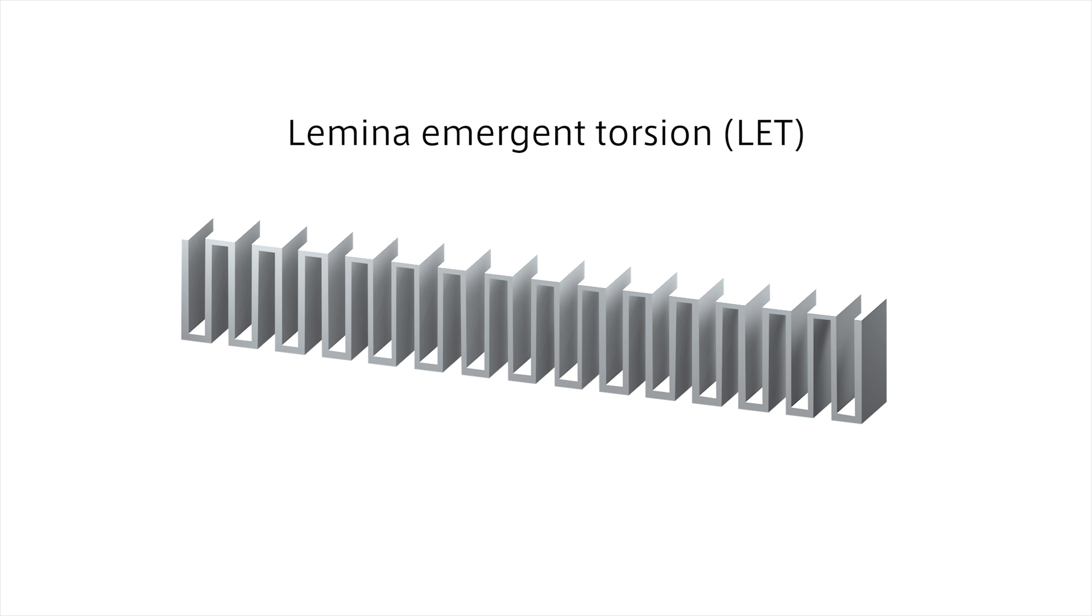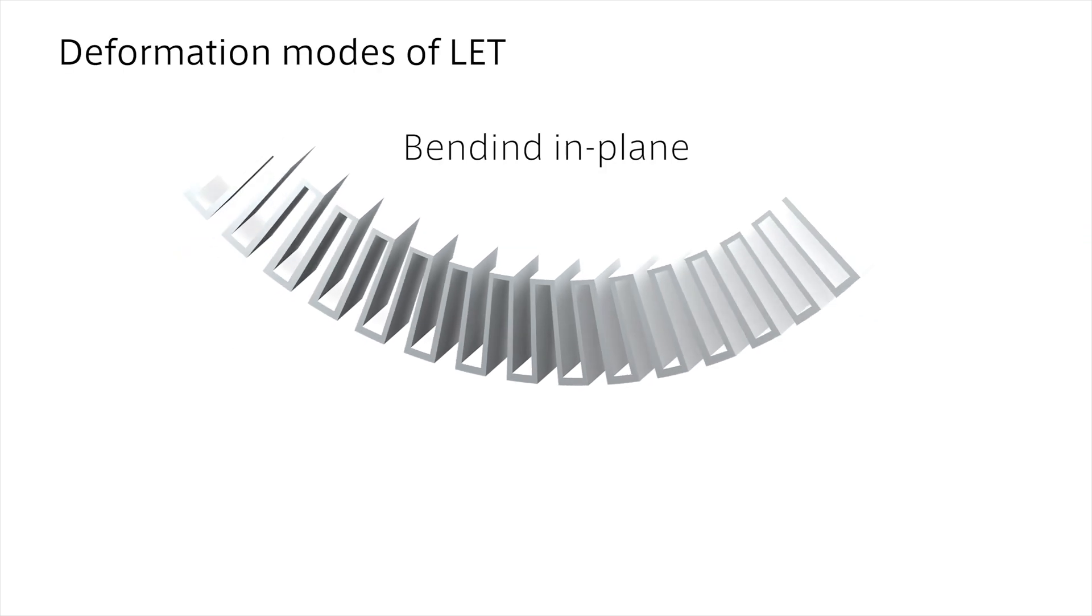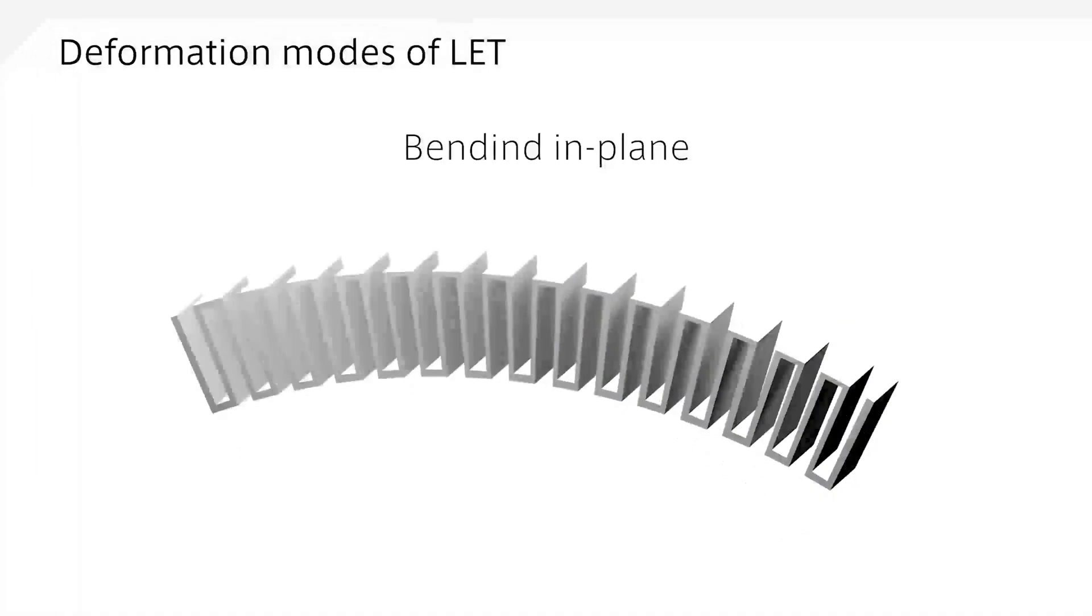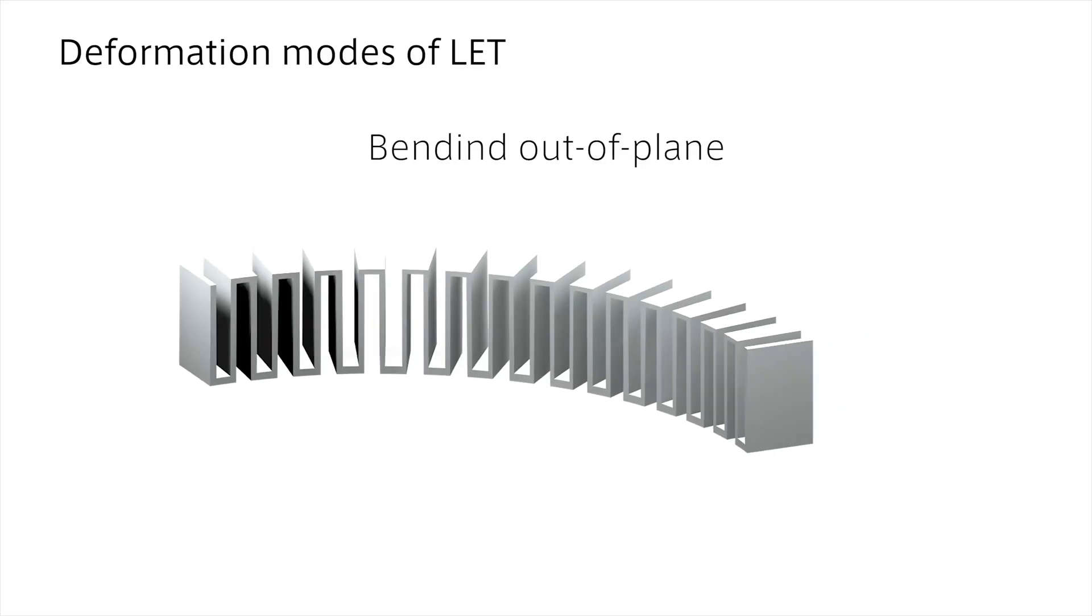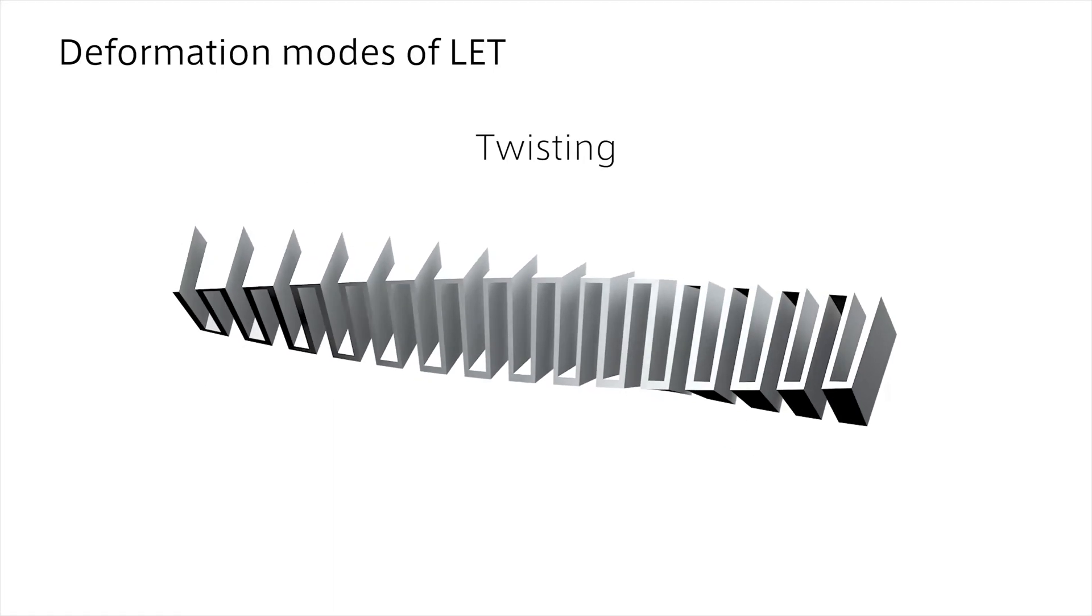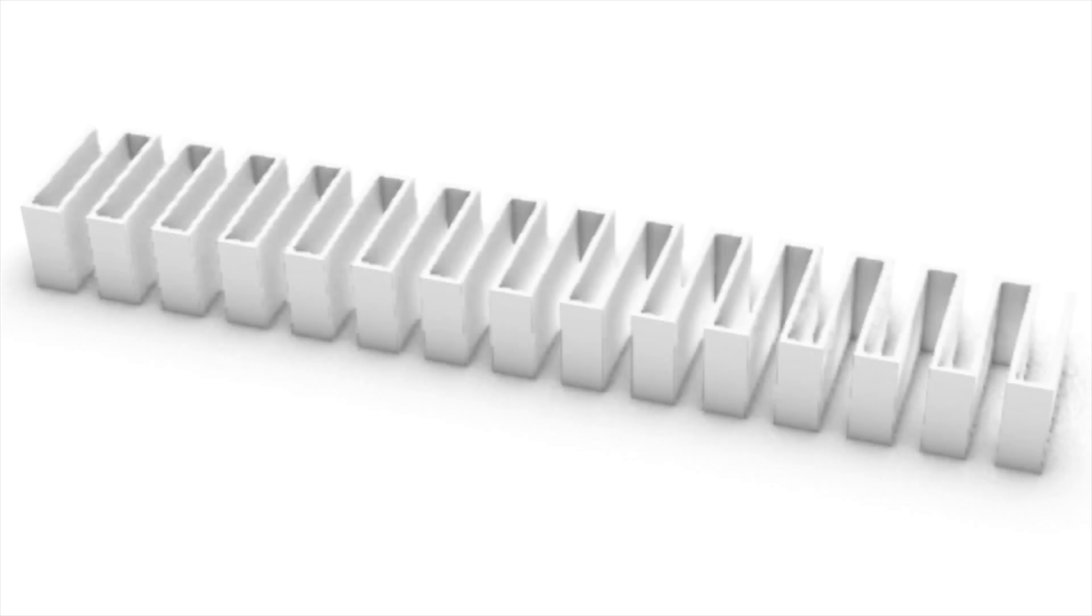First, we describe the design method and structural analysis of the mechanical metamaterial that can uniquely define deformation. The key word is isolated deformation. We defined isolated deformation as deformation properties that are flexible in one deformation but stiff in the other deformations.